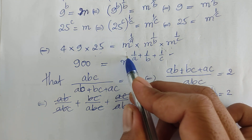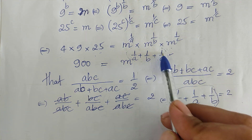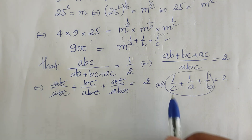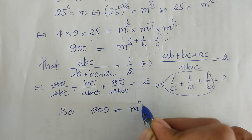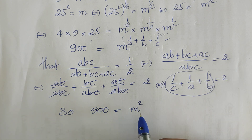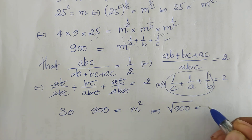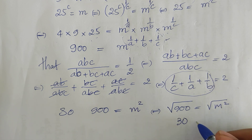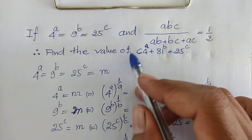So 1/A + 1/B + 1/C = 2. Replacing that in our equation, we get 900 = M^2. Taking the square root of both sides, we get M = 60. Now that we know M = 60, we can find the value of our expression.